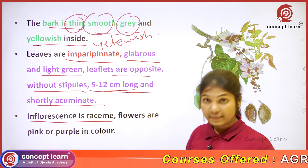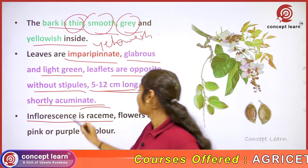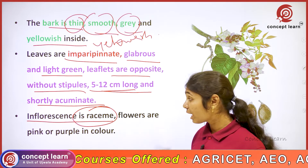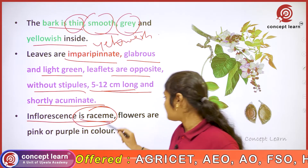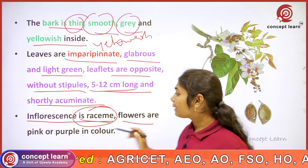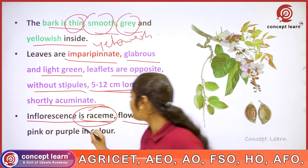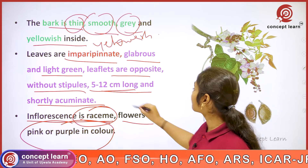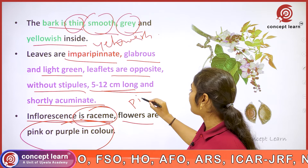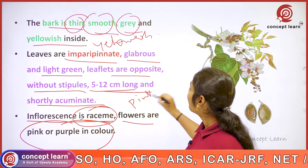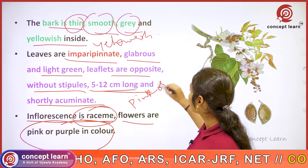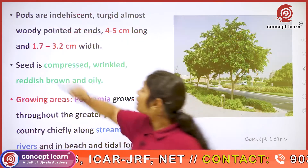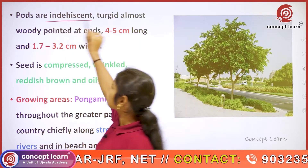The inflorescence of Pungamia pinnata is a raceme. The flowers are pink or purple in color.